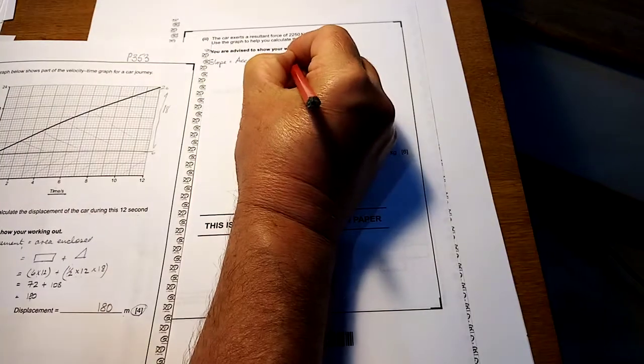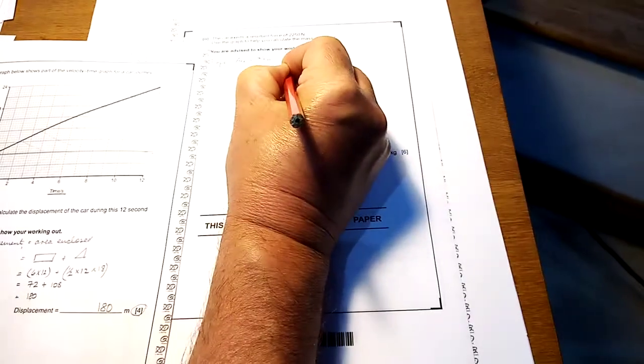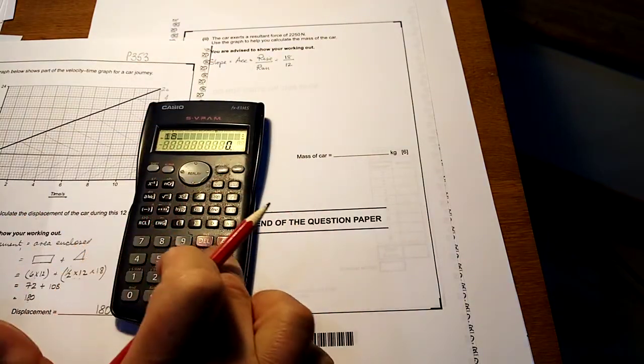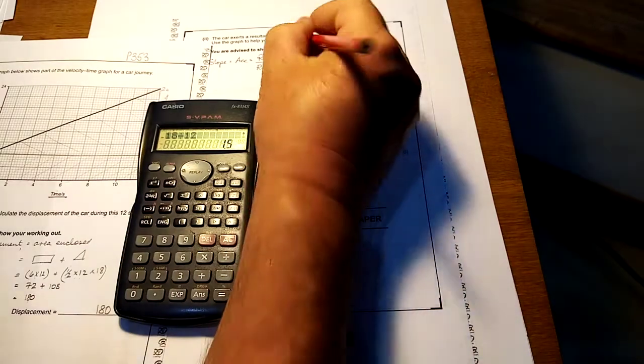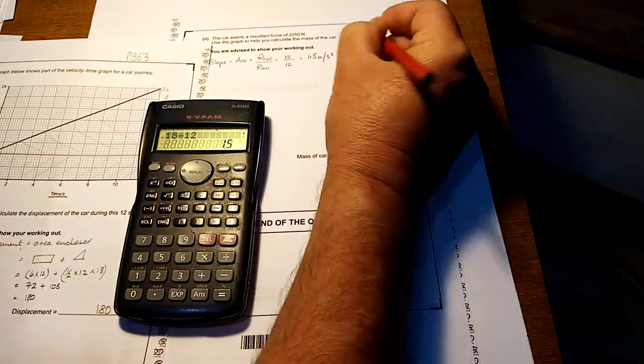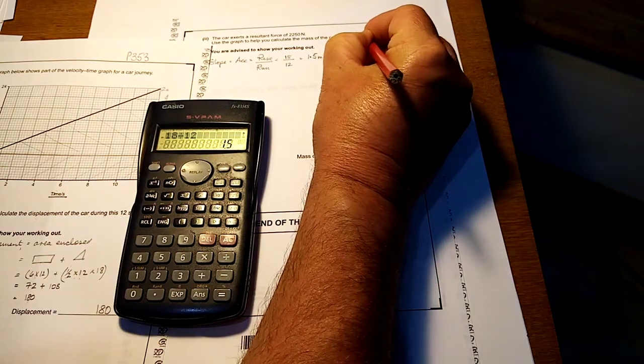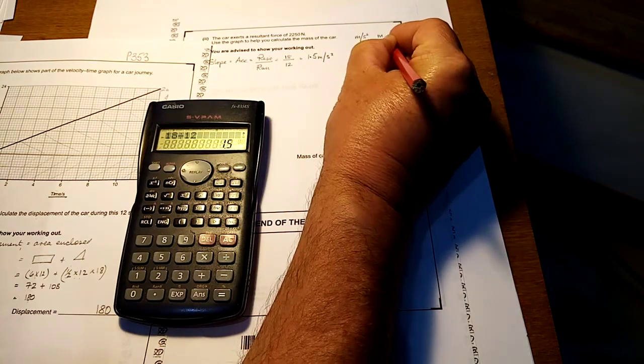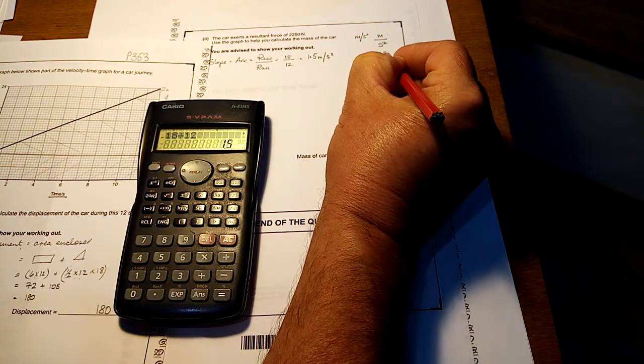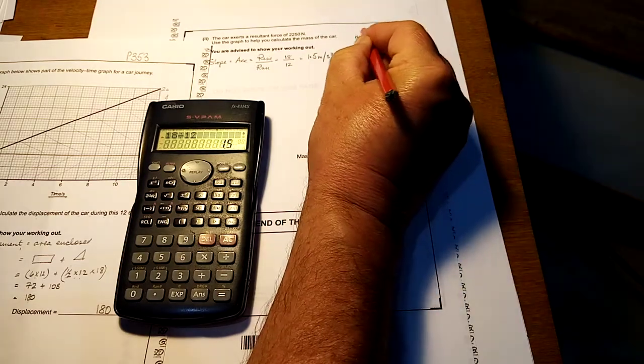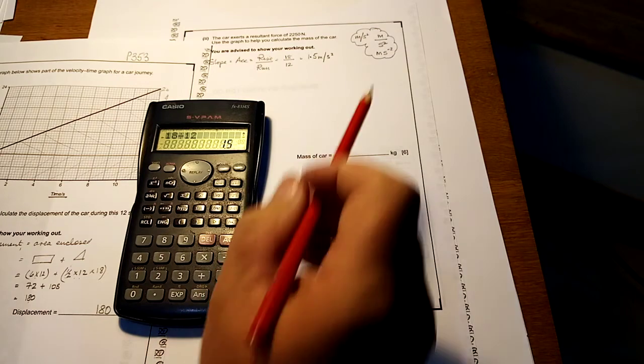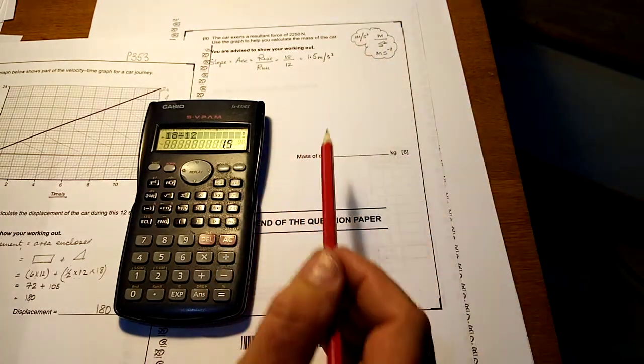Now. There's the rise is eighteen. And the run is twelve. Get your calculator out. Eighteen divided by twelve. One point five. Meters per second squared. Meters second squared. Meters per second squared. Remember. Bring up that. They're all the same thing. All the same thing. The examiner might write these all these ways just to confuse us.